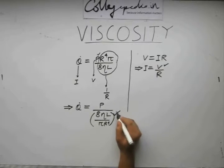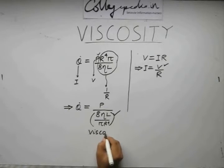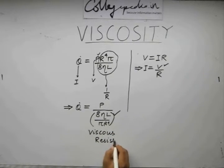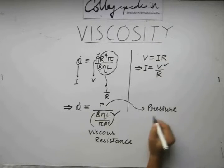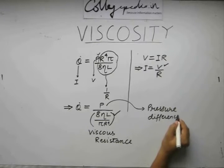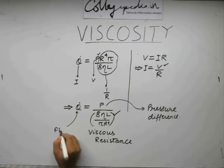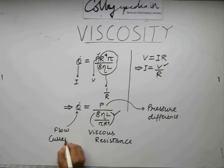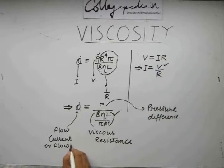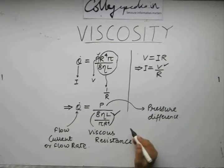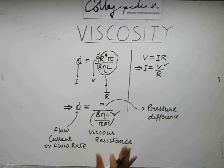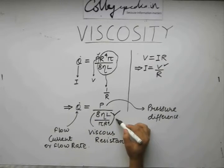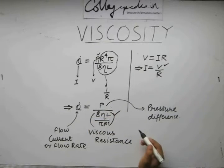This is known as the flow resistance or the viscous resistance. This quantity is the pressure difference. This is the flow current or flow rate. Note that this relation comes in very handy when you are solving multiple choice question type problems. In that case, if they simply give you a pipe with such a flow, you can always write this equation considering this as a resistance, this as the voltage difference, this as the current.